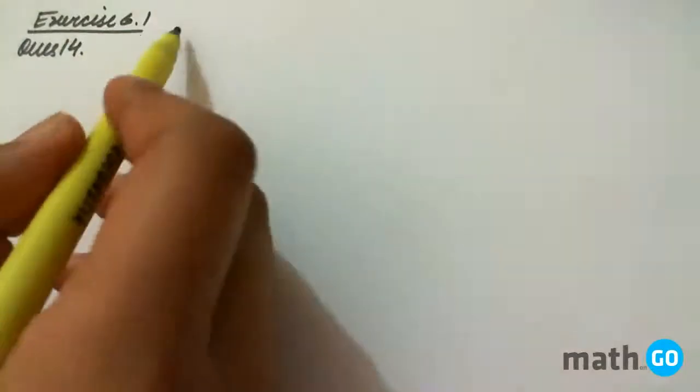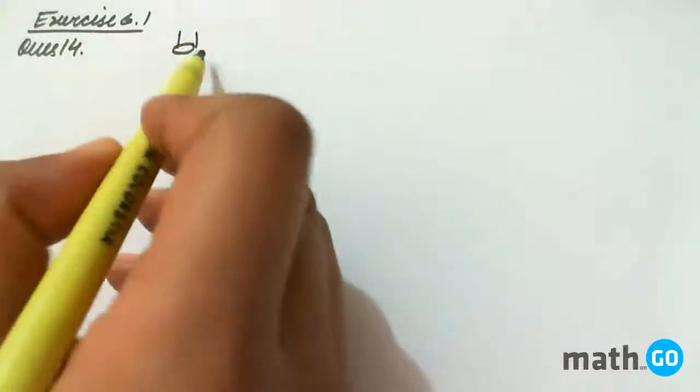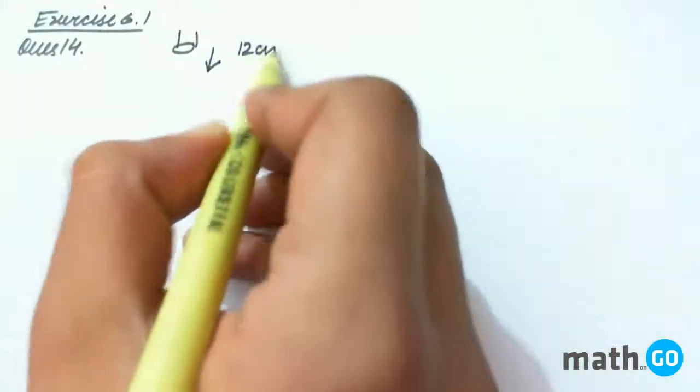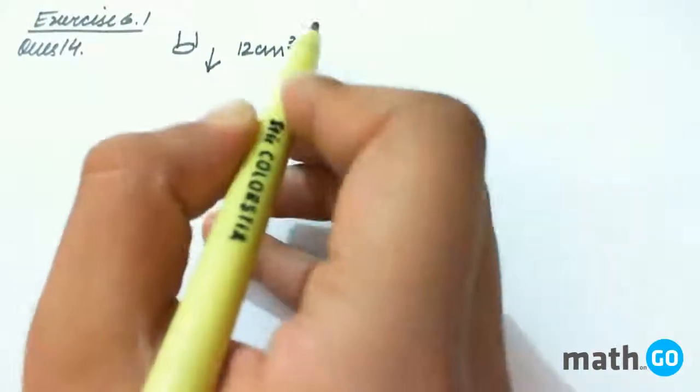Exercise 6.1 question number 14. It says that we have a pipe, and the sand is falling at the rate of 12 centimeter cube per second.